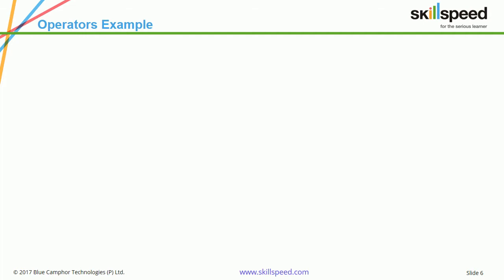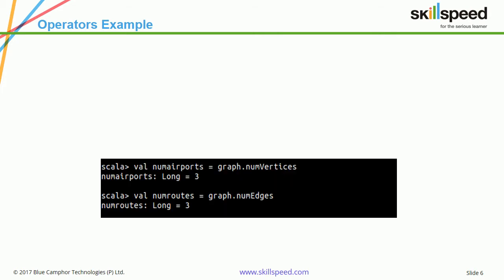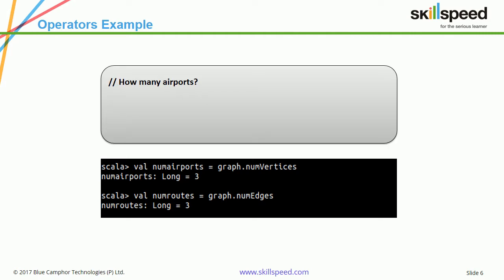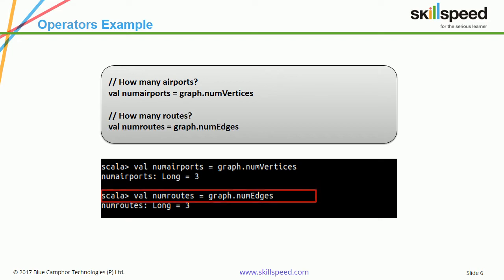Let's build our exploration on the same graph created in the last lesson. This graph contains airports as vertices and routes as edges. If you want to find out how many airports are in the system, all you need to do is call graph.numVertices and store it in a variable called numAirports. The answer is 3, and graph.numEdges also returns 3, meaning our graph has 3 airports and 3 routes connecting them.